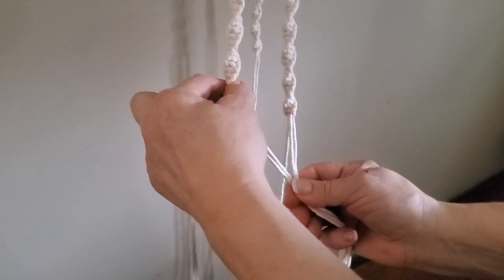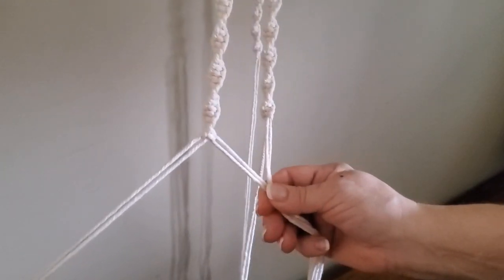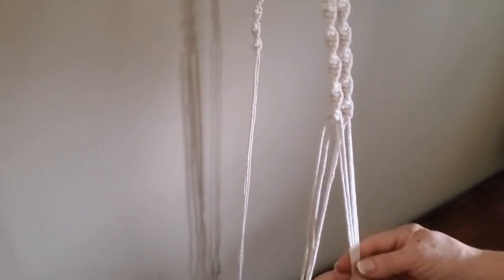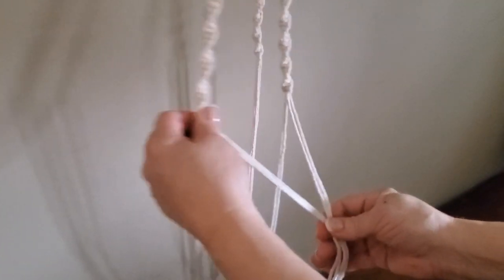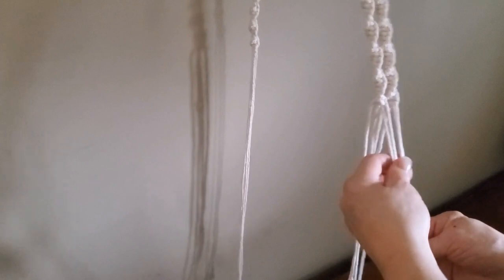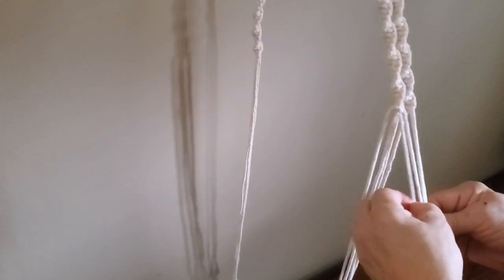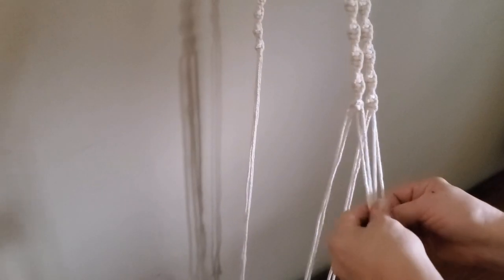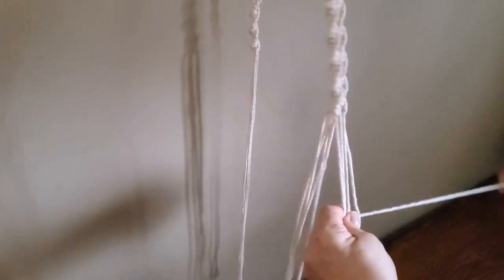Now holding these two cords together, you decide how far down you want to make your knot. The longer the space, the larger the pot. This space is about five inches. These knots you do want to pull nice and tight.